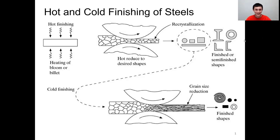Welcome back. We are going to keep going on material properties and today we are going to discuss hot finished and cold finished steels. When we form, shape, or roll steel, we can do it either in the hot red condition or at room temperature. Hot finishing means you work the material while it is in the hot red condition, usually above the austenite temperature, which is above 1500°F or 820°C.